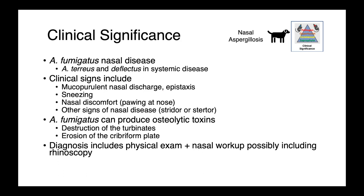Clinical signs of nasal aspergillosis include mucopurulent nasal discharge and epistaxis, sneezing, and nasal discomfort — so they're going to be pawing at their nose. Aspergillus fumigatus can produce osteolytic toxins, so we get destruction of the turbinates within the nose, and we can also get erosion of the cribriform plate and invasion of the fungus from the nasal cavity into the brain.